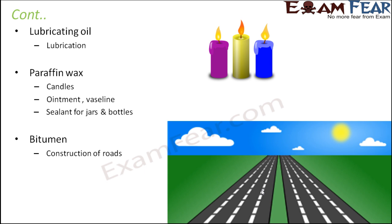Last but not the least is bitumen, which is extremely useful in the construction of roads. If you have ever seen how roads are being constructed or smoothed, bitumen is the substance that acts as a glue. When it is mixed with aggregate particles, it creates a concrete surface. Small particles stick to the bitumen glue, and that is how the smooth surface of the road is achieved. Bitumen is therefore one very important component of petroleum.